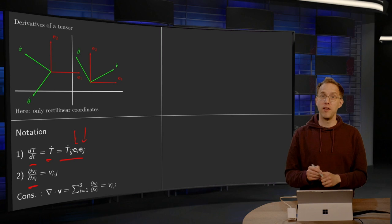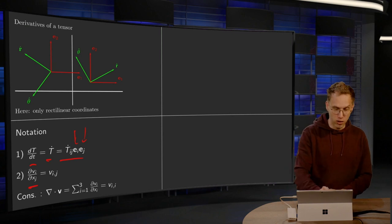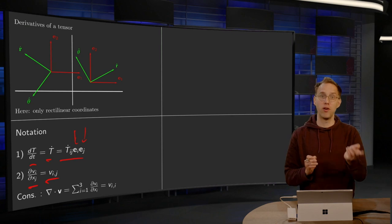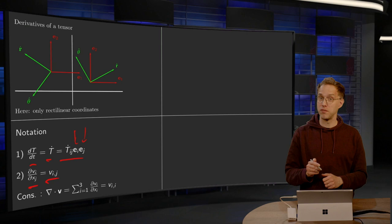And we denote it by v_i,j. So the comma j means take the partial derivative of v_i with respect to x_j. And a consequence of this notation is that you can rewrite the divergence of the vector fields.